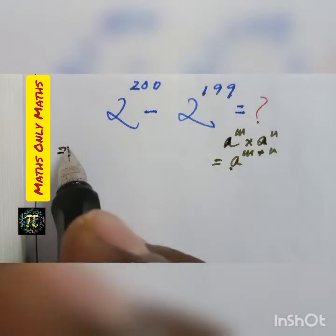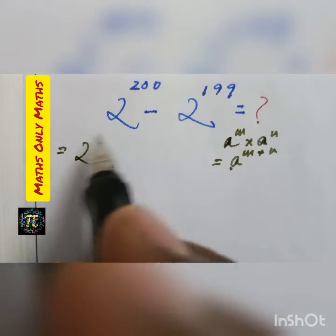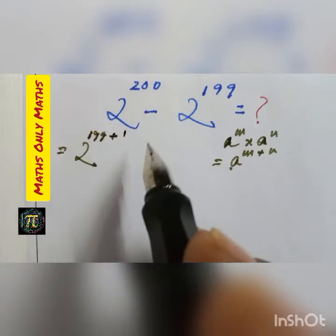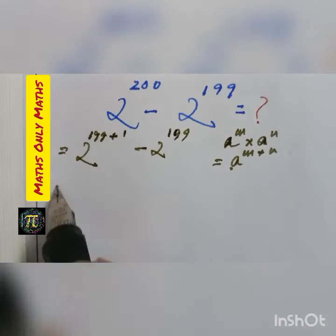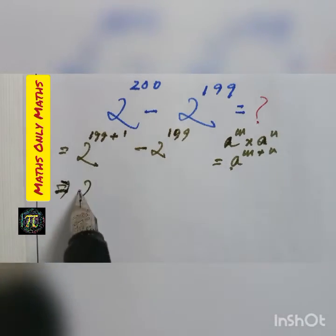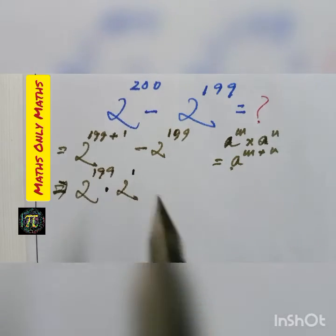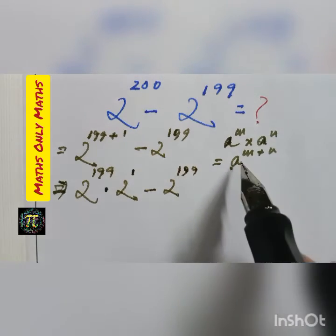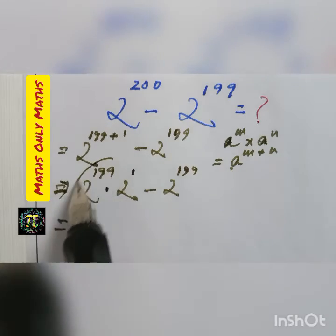Now I write 200 as 199 plus 1, so the expression becomes 2 to the power (199 plus 1) minus 2 to the power 199. Applying the law of exponents, this becomes 2 to the power 199 multiplied by 2 to the power 1, minus 2 to the power 199.